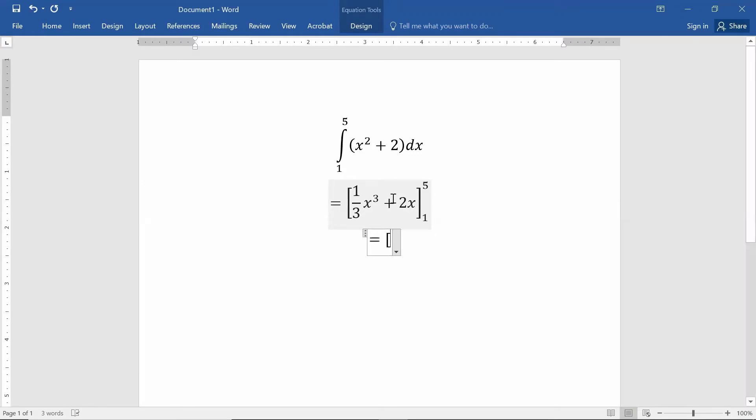One third x to the third plus 2x is my antiderivative that I'm choosing. I need to plug in 5 into that function, or that expression, and then I need to plug in 1 into that expression. Once I've done that, I can calculate both of these numbers in the brackets.